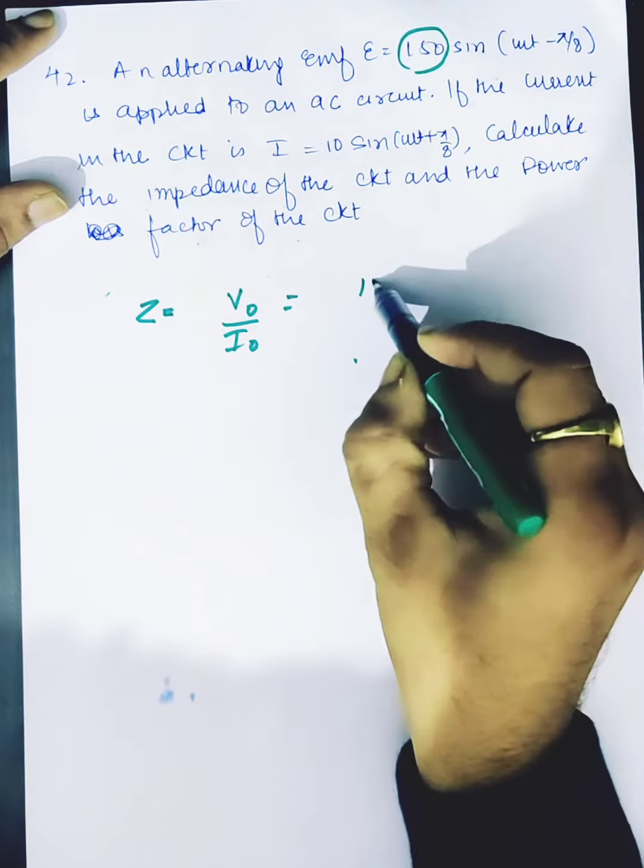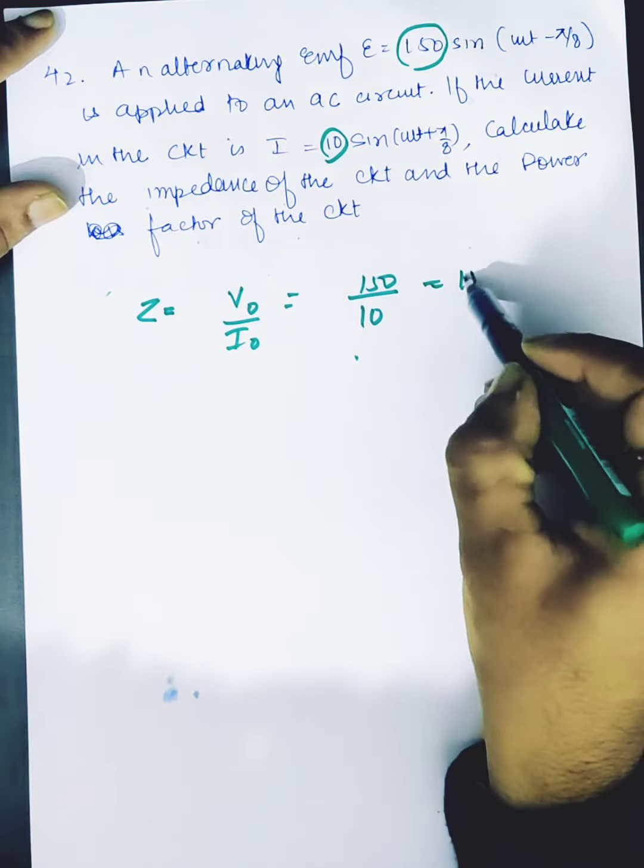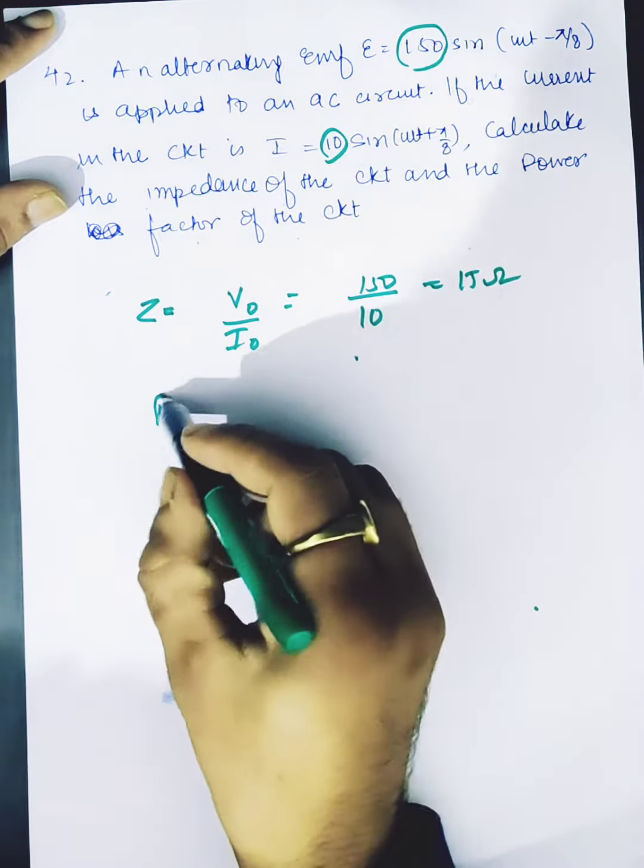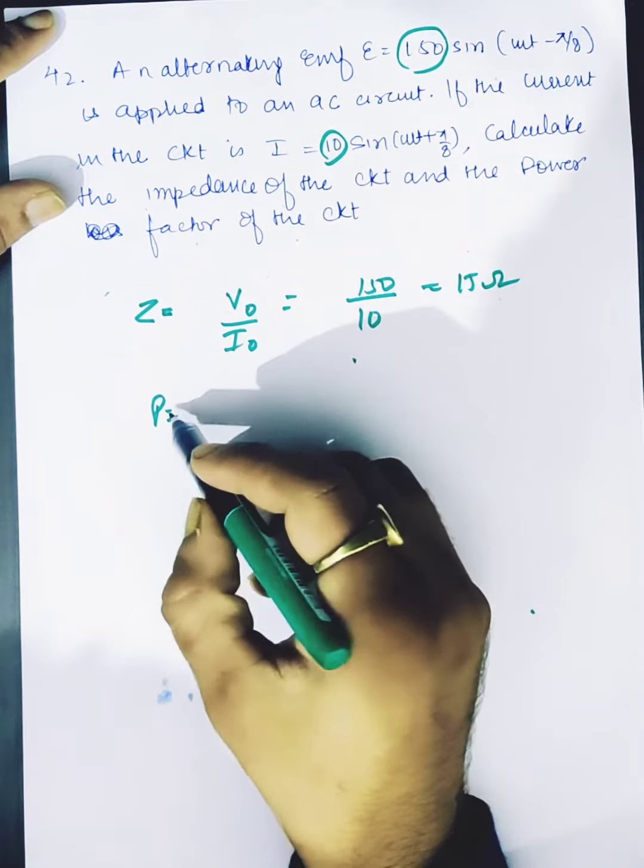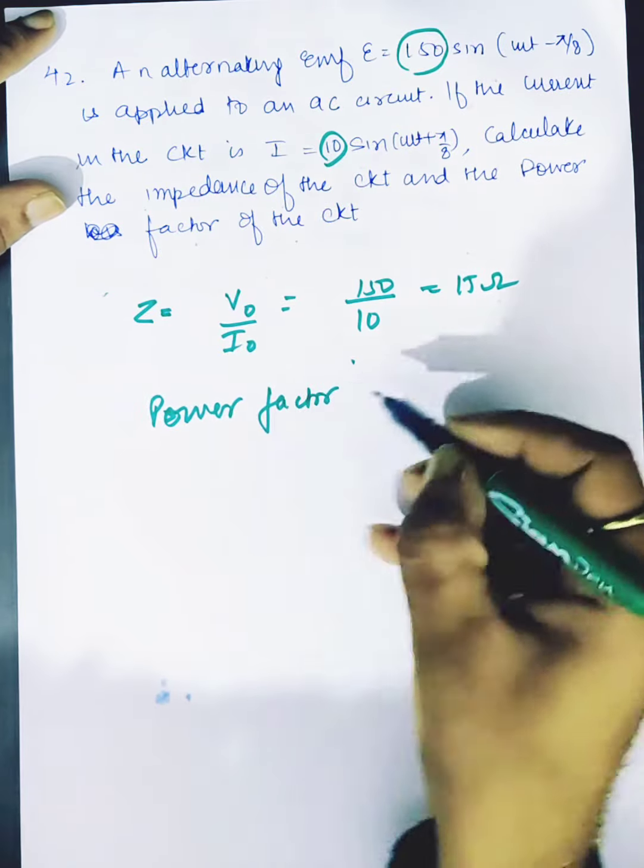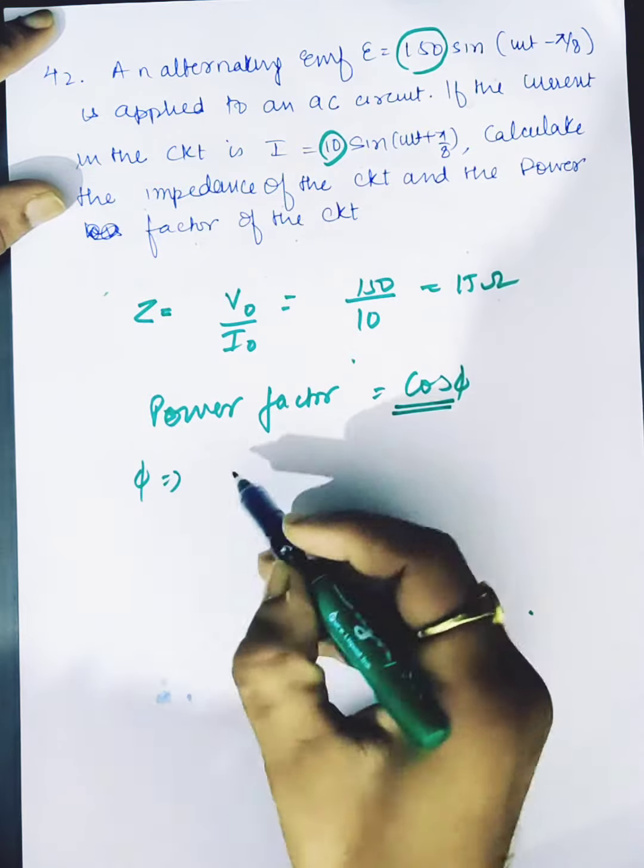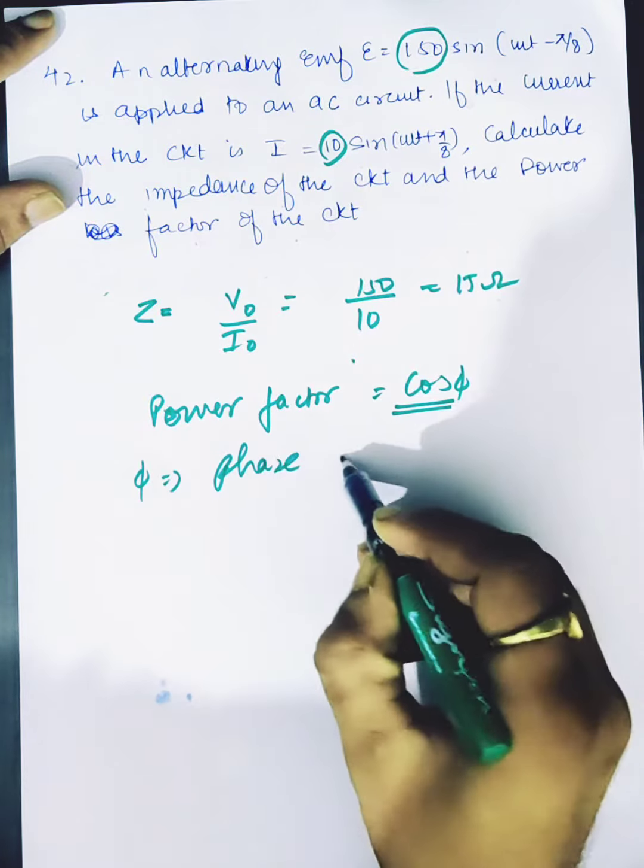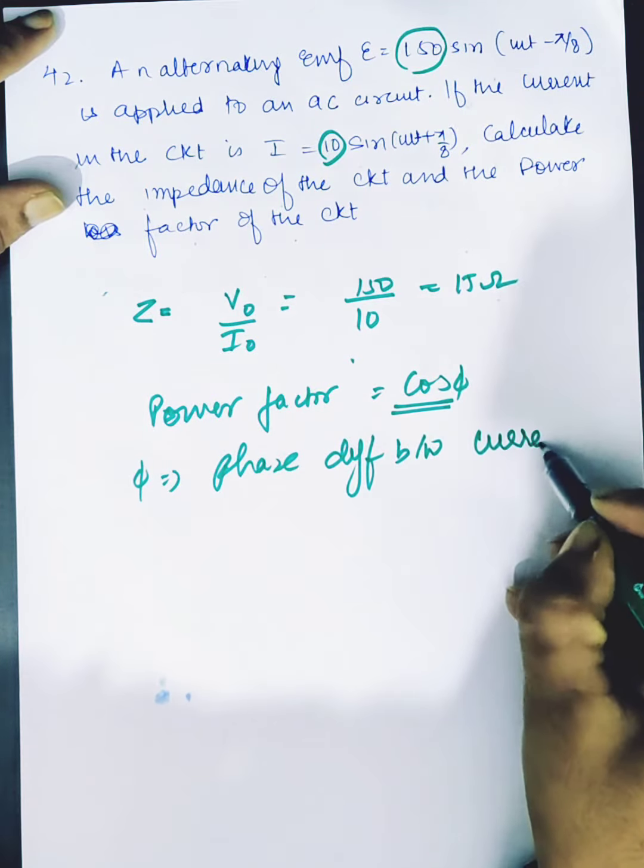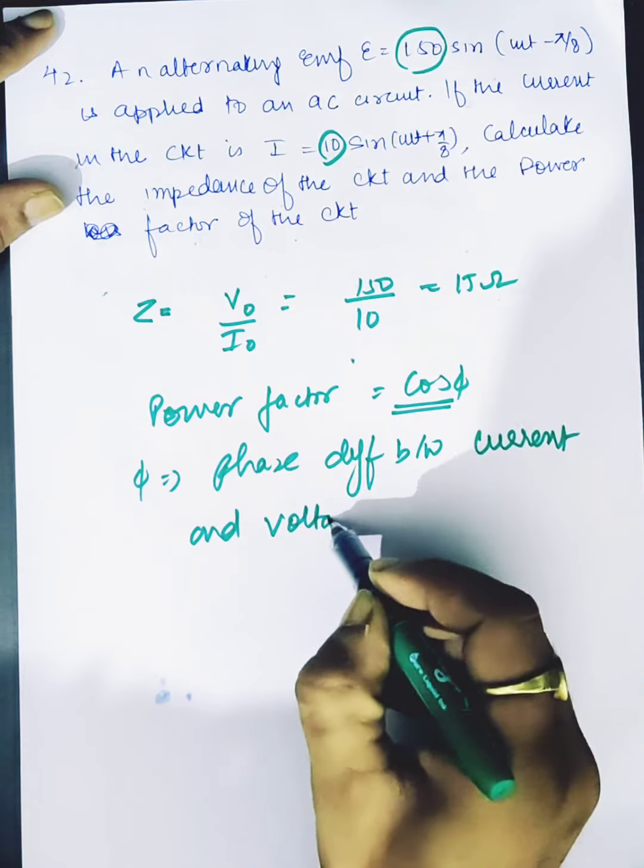Power factor is cos φ. Now what is φ? That is the phase difference between current and voltage. We can see current which is above capacitor circuit, so φ is the phase difference.